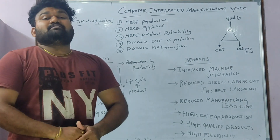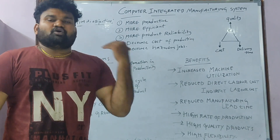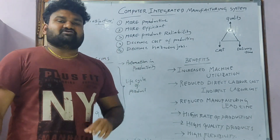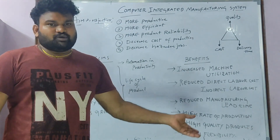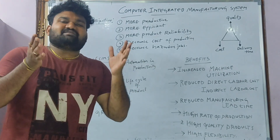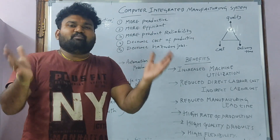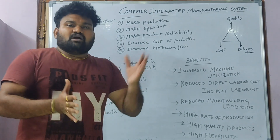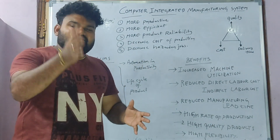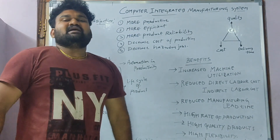Computer Integrated Manufacturing System. Computer Integrated Manufacturing System is an integration or a combination of computer-aided design, computer-aided manufacturing, and business activities of a particular factory or a particular company.